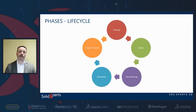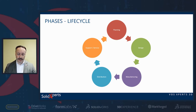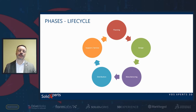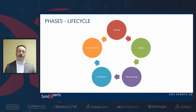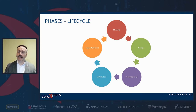A lifecycle is basically comprised within five phases: planning, design, manufacturing, distribution, and support and service. It is a circle because it never ends, as you're mostly already aware of. Let's go through each of these phases.